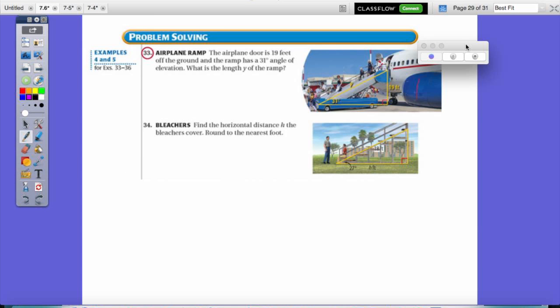So, now we're going to work on the problems that you had for homework. Problem number 33 involves an airplane ramp. The airplane door is 19 feet off the ground and the ramp has a 31 degree angle of elevation. What is the length y of the ramp? You can clearly see if this is the 90 degree angle, you're finding the hypotenuse. I'm dealing with a 31 degree angle. I want to find the hypotenuse. Hypotenuse only uses sine or cosine. And 19 is opposite 31 degree angle.